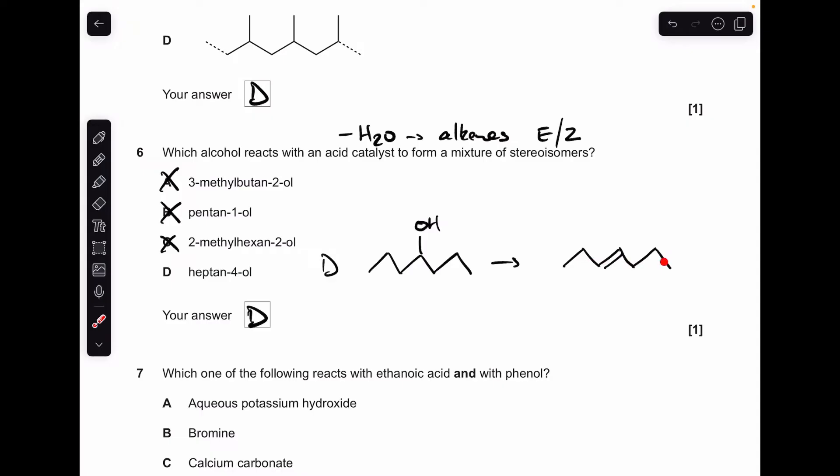So D is obviously the right answer. Quickly explain why. That's the product from the dehydration of heptan-4-ol. This carbon here has got hydrogen and this ethyl group, so they're different to each other. This carbon here has got hydrogen and this propyl group, so they're different from each other. So we can have EZ.